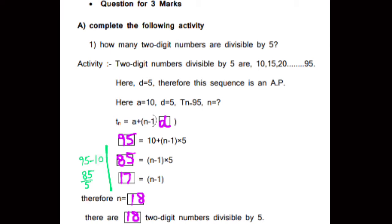Look at the question. Question for 3 marks, A. In this activity, you will be asked to complete the following activity. First question: how many two-digit numbers are divisible by 5? Even though the question is in a single line, there are different conditions. You have to find out how many — the conditions being two-digit numbers divisible by 5. Divisible by 5 means those numbers should be divisible by 5, i.e., the remainder must be 0. In simple terms, those numbers are multiples of 5. You have to start from 10.